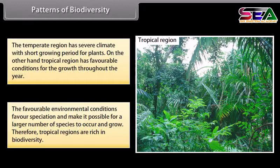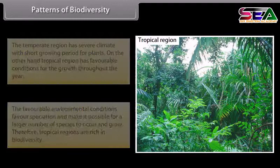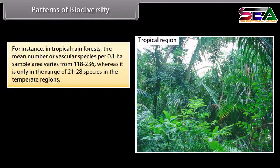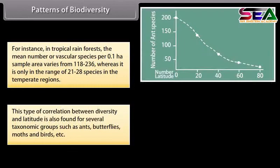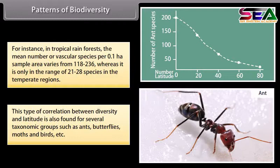The favorable environmental conditions in tropical regions favor speciation and allow a larger number of species to occur and grow. Therefore, tropical regions are rich in biodiversity. For instance, in tropical rainforests, the mean number of vascular species per 0.1 HA sample area varies from 118 to 236, whereas it is only in the range of 21 to 28 species in temperate regions. This correlation between diversity and latitude is also found for several taxonomic groups such as ants, butterflies, moths, and birds.